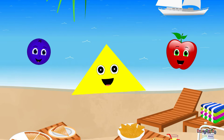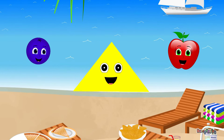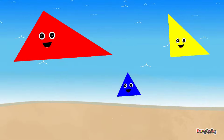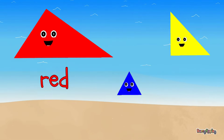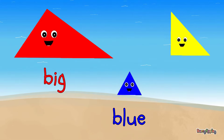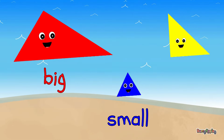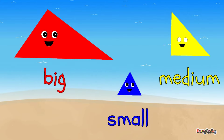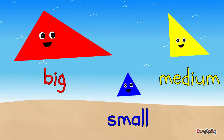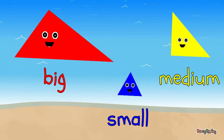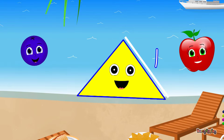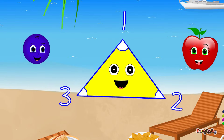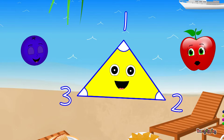Triangles can be different sizes and different colors. This red triangle is big. This blue triangle is small. This yellow one is medium. I really like them all. Triangles have three sides and three corners.